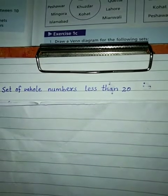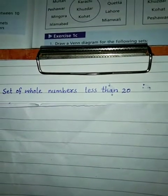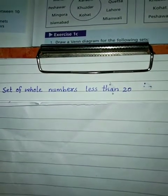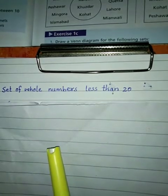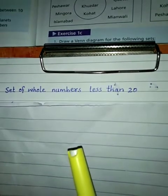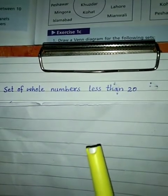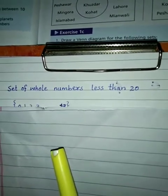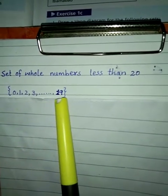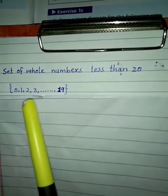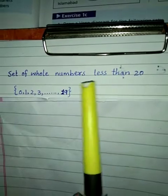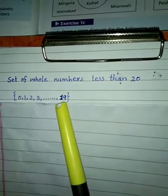Whole numbers zero سے counting start ہوتی ہے۔ اس set میں ہمیں whole numbers less than twenty لکھنے ہیں — یعنی twenty سے کم جتنے whole numbers ہیں۔ Elements limited ہیں، twenty سے اوپر نہیں جا سکتے۔ تو یہ set ہوگا: {0, 1, 2, 3, ... 19}۔